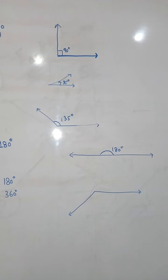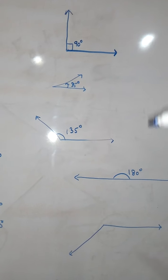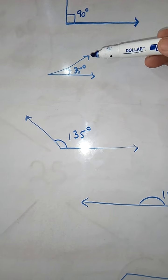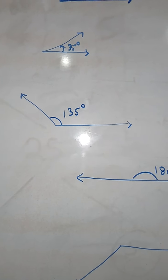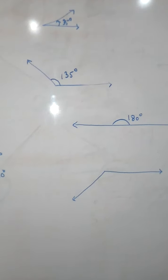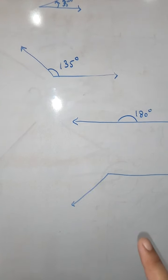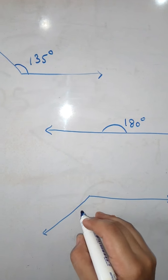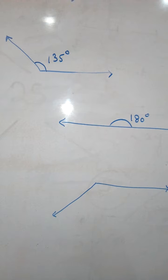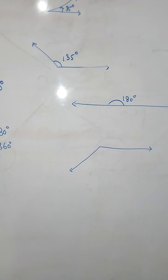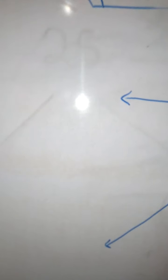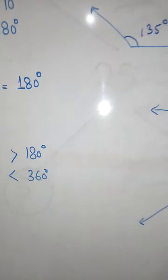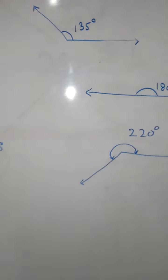The first four angle types always show inner rotation — the distance between the two arms measured on the inside. But a reflex angle focuses on the outer rotation, meaning you measure going around the outside of the arms. It is always greater than 180 degrees but less than 360 degrees — for example, 220 degrees or 240 degrees.